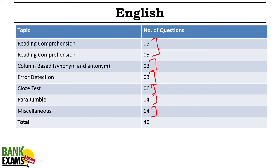If in your mock tests you were already scoring around 15 to 20 out of 40, you'll be scoring similar marks in the actual exam — the exam level was similar to mock test level. The cutoff for English you can expect is around 12 to 13 out of 40.